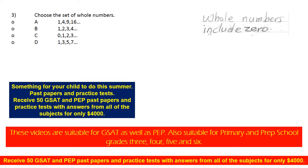Let's go through each choice quickly. Choice A: 1, 4, 9, 16, and so on. It doesn't include 0 — there's no 0 there, so it's not the set of whole numbers.